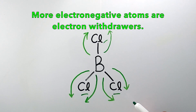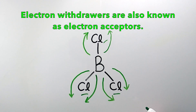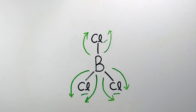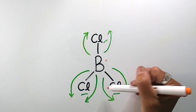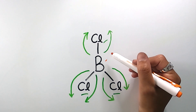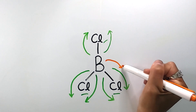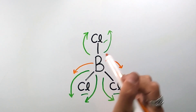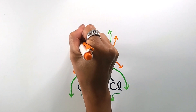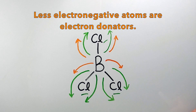Now from the perspective of the chlorine atom, they are simply accepting electrons from the boron. So electron-withdrawing groups are also known as electron-accepting groups. The boron is less electronegative than any of the chlorines, so it does not have the power to pull electrons toward itself. Instead, it allows its electron cloud density to go toward the electron-withdrawing groups, or toward the more electronegative atoms. Therefore it is known as an electron-donating group.